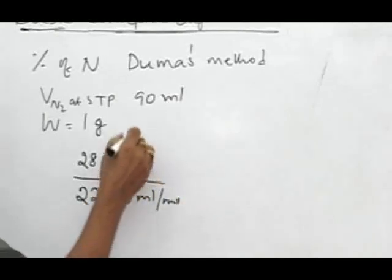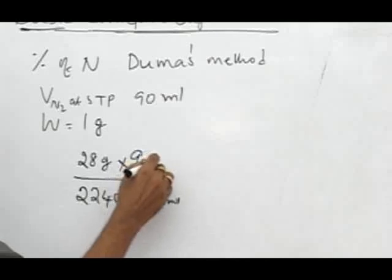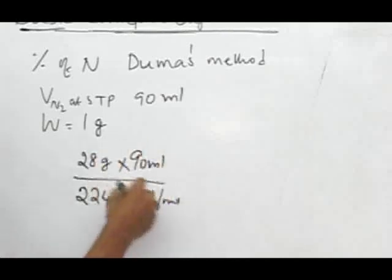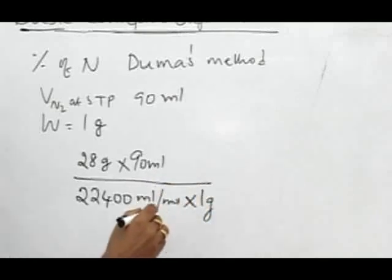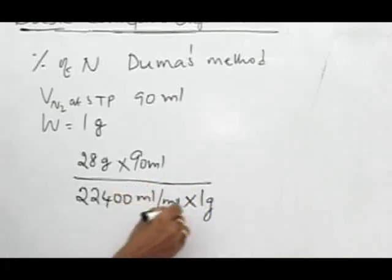Now the volume obtained is 90 ml. The whole thing comes from 1 gram of organic compound, so this will give the amount of nitrogen present in 1 gram.